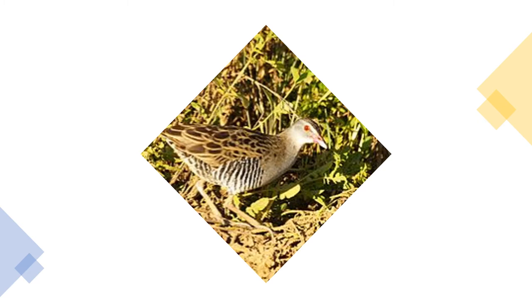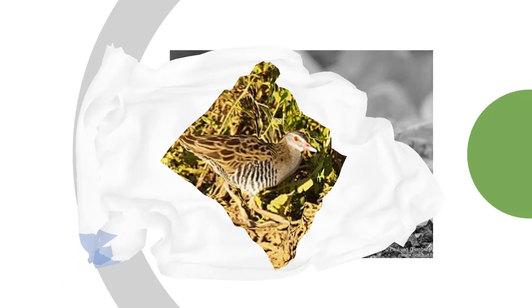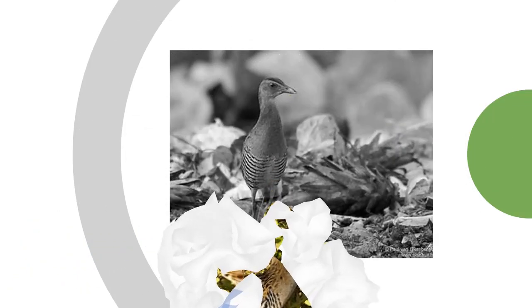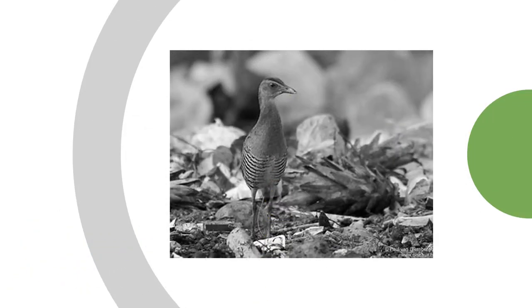It may roost in a depression near a grass tussock and it will bathe in puddles. The African crake feeds on invertebrates including earthworms, gastropods, mollusks, and the adults and larvae of insects, especially termites, ants, beetles and grasshoppers.